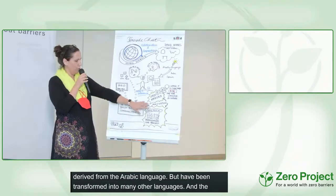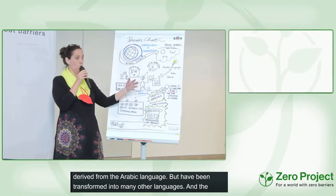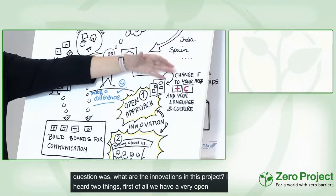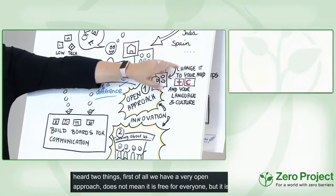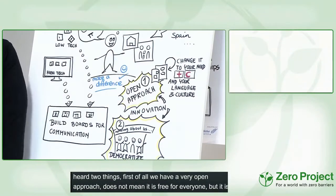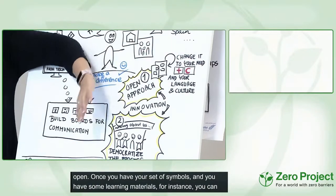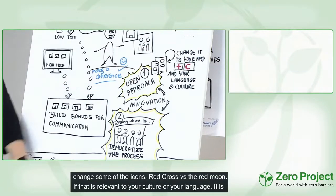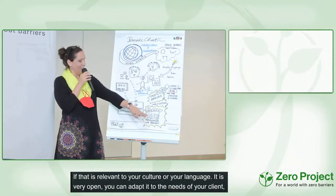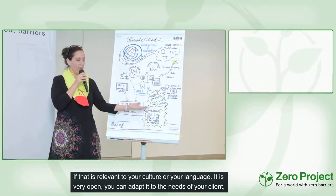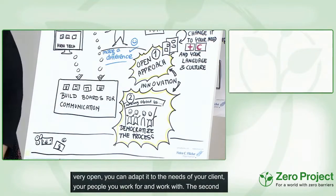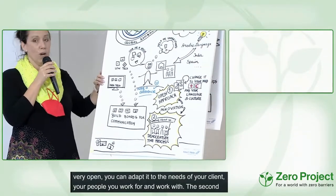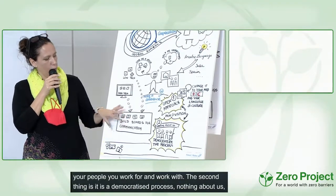The symbols are derived from the Arabic language but have been transformed into many other languages. The innovations within this project: first, you have a very open approach — it doesn't mean it's free for everyone, but it's open. Once you have your set of symbols and learning materials, you can just change some of the icons — the red cross versus the red crescent, if that's relevant for your culture. So it's very open. You can adapt it, change it to the needs of your people. The second innovation is a democratized process — nothing about us without us. You involve the experts and develop things that are low-tech — you can print it out — but also high-tech. In both versions, you build boards for communication.